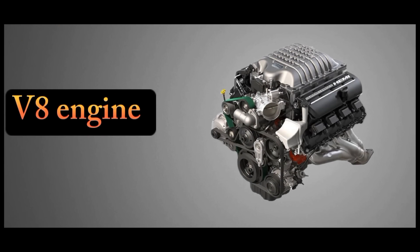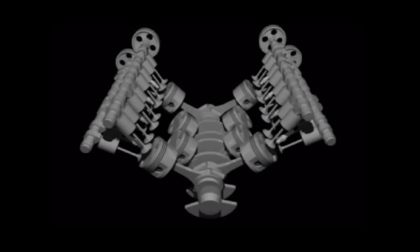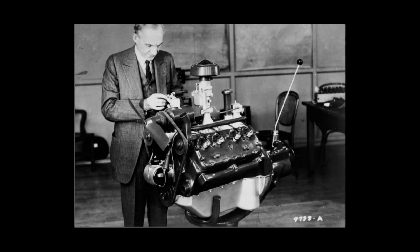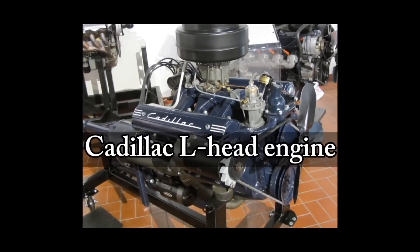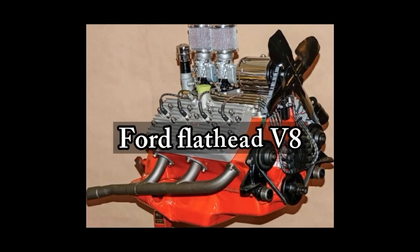The V8 engine is an eight-cylinder piston engine where two banks of four cylinders share a crankshaft. The first V8 engine was produced by a French company in 1904. The American Cadillac L-head engine is considered the first mass-produced V8, and the popularity of V8 engines greatly increased after the introduction of the Ford Flathead in 1932.